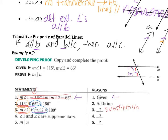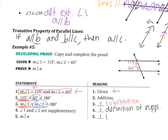If angle 1 plus angle 2 equals 180, my next statement is that angle 1 and angle 2 are supplementary. The reason is just the definition of supplementary — angles that sum to 180 are supplementary. Lastly, M is parallel to N. Looking at the figure, angles 1 and 2 are consecutive interior angles. If consecutive interior angles are supplementary, then the lines are parallel. So in step 4, we proved consecutive angles that are supplementary, and that tells us the lines are parallel.